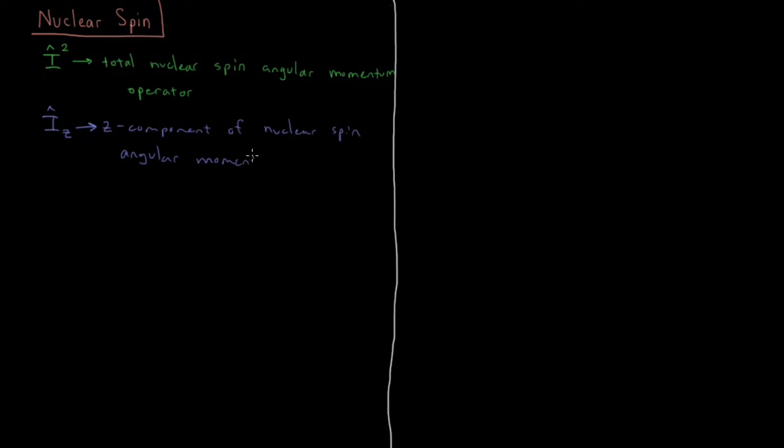Very long winded name - Z component of nuclear spin angular momentum operator. Hopefully that's clear. We're talking about the same thing we had for electron spin, but for a nucleus.